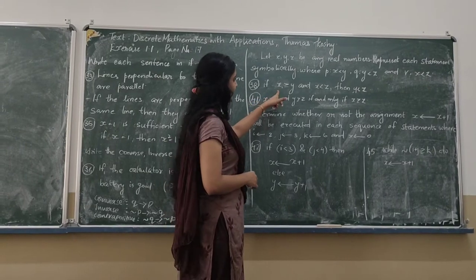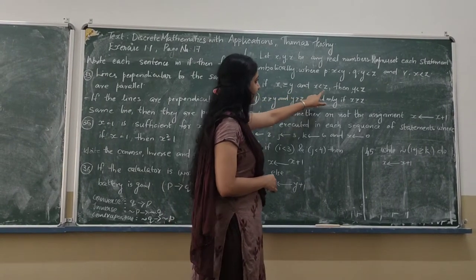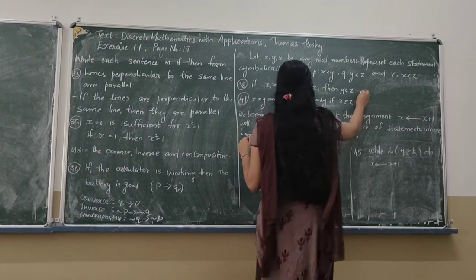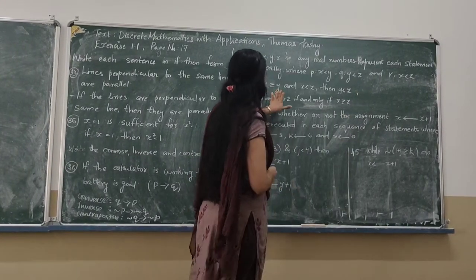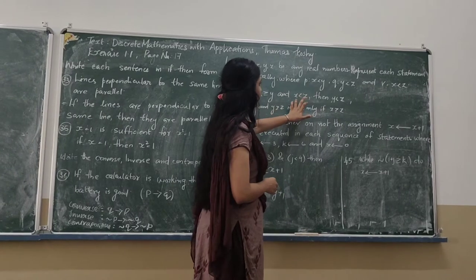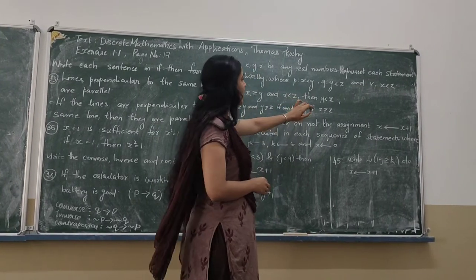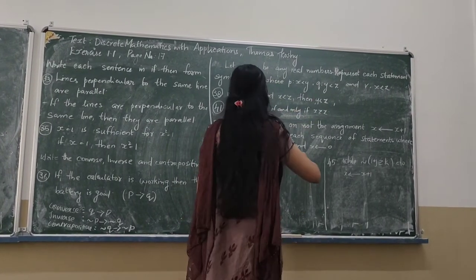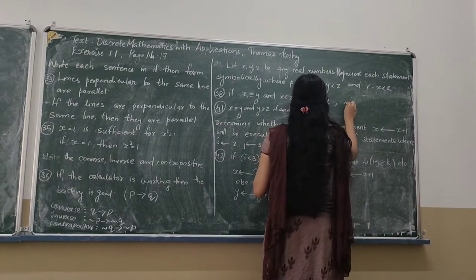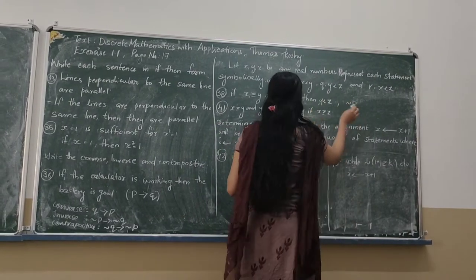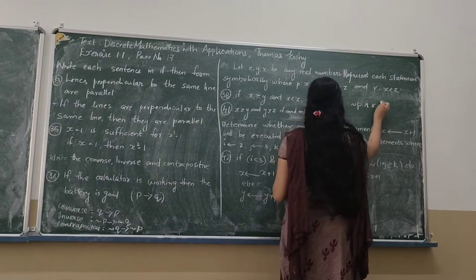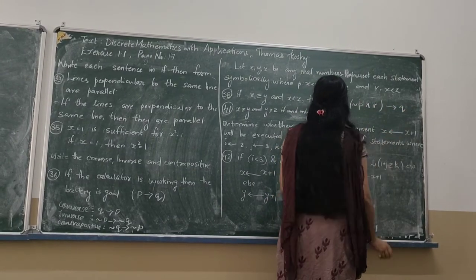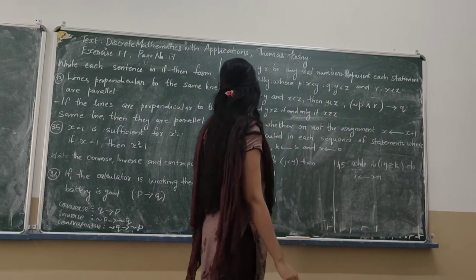So the 38th question is: if X greater than Y and X greater than Z, then Y greater than Z. We represent this symbolically: X greater than Y is the negation Q statement, X greater than Z is the R statement, and Y greater than Z is the Q statement. So this gives the symbolic representation of this form.